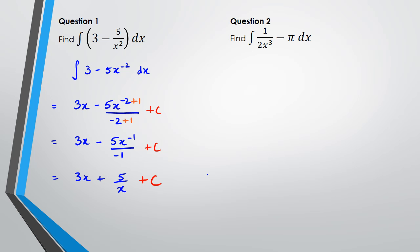Question number two — same thing. First I'm going to bring the x cubed to the numerator. Just be careful: don't bring the 2, just the x cubed, because the 2 has a power of positive 1 and we can leave it as is. So we rewrite this as x to the power of negative 3 over 2 minus pi, dx. Pi is a constant — just like how we had 3 in the first question — so when you integrate pi you get pi·x.